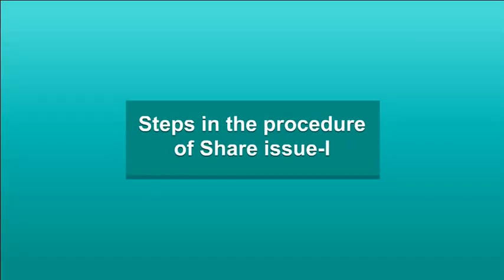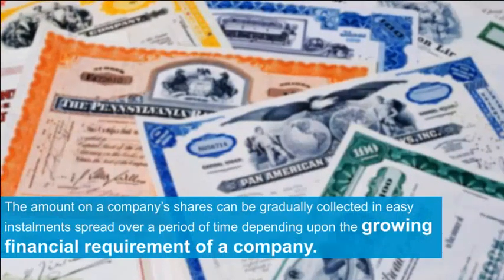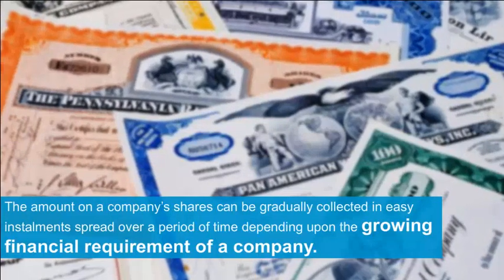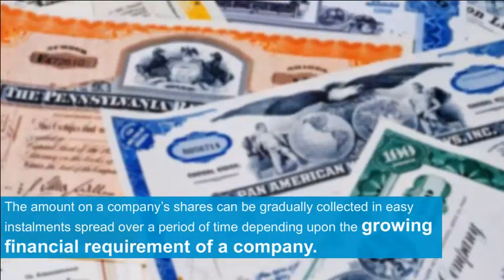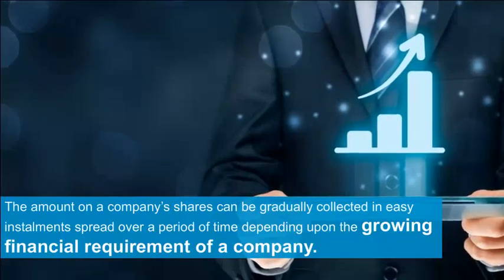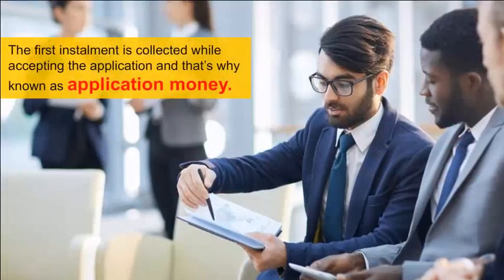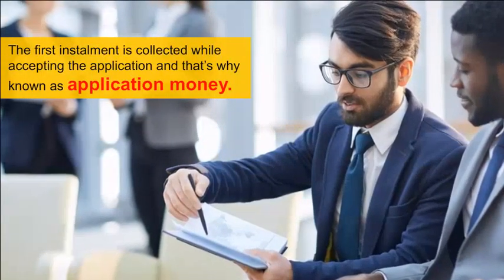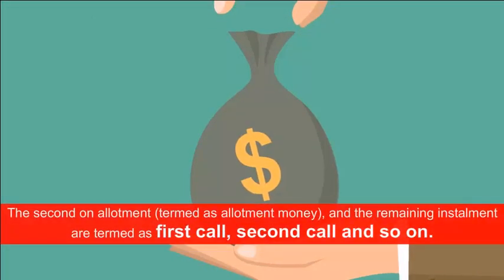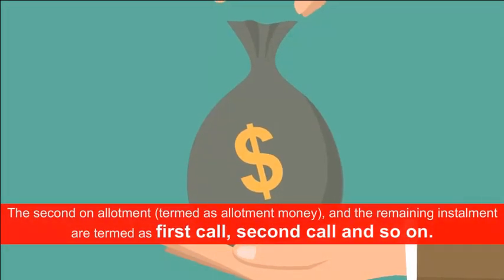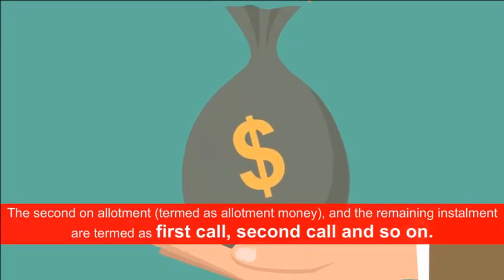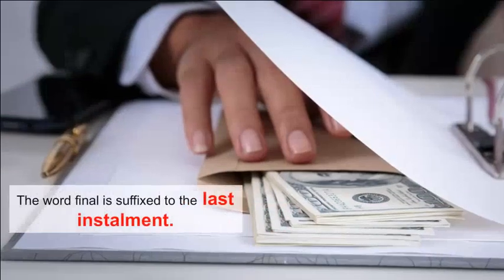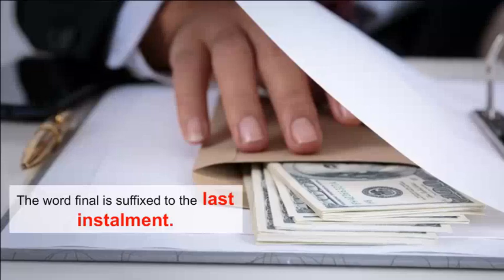Steps in the Procedure of Share Issue: The amount on a company's shares can be gradually collected in easy installments spread over a period of time. The first installment, collected while accepting the application, is known as application money. The second is termed allotment money, and the remaining installments are termed first call, second call and so on, with the word 'final' suffixed to the last installment.